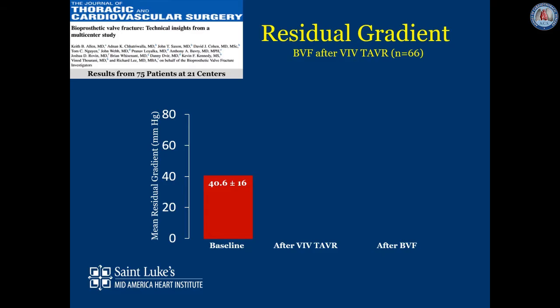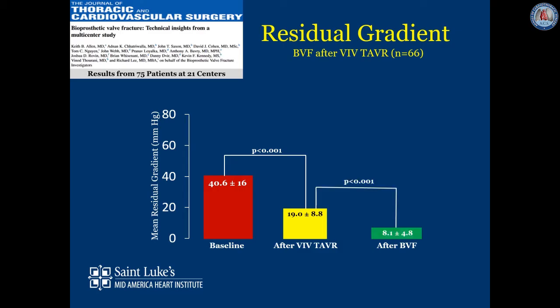In a recent 75-patient, 21-center multicenter report, residual gradients were significantly reduced following BVF. Baseline gradient in the failing surgical valve was approximately 41 mmHg. Following valve-in-valve TAVR, that gradient was significantly reduced to 19, but was still elevated. After BVF, mean residual transvalvular gradient was now reduced to less than 10 mmHg.